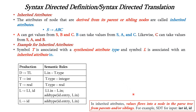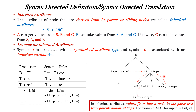In inherited attributes, values will be flowing into a node in the parse tree from parents and siblings. We are considering the input string int id comma id. According to rule number 1, D tends to TL, so D is represented as T and L. This T is represented as int, so T dot type equals int. This L is represented as L1 comma id because we need two variables, so we use the rule L tends to L1 comma id. And this L1 is again represented as id according to the last rule.